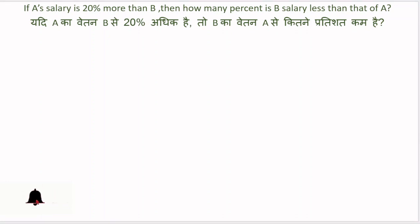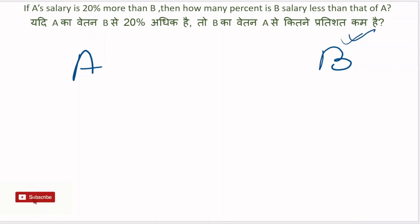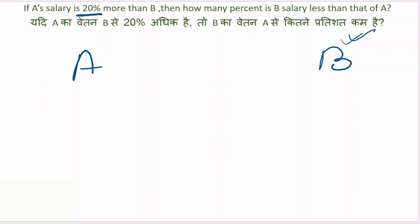Yahaan pe 2 persons hain — ek hai A aur doosra hai B. Question mein diya hua hai: A's salary is 20% more than B. Koi exact amount nahi diya hua hai, 20% zyada hai salary A ka B se. Toh yahaan pe reference kiska lena hai? B ka reference lena hai. Yahaan pe percentage diya hua hai, toh is tarah ke question mein jahaan pe percentage diya hota hai, wahaan pe base value ko hamesha 100 maante hain.